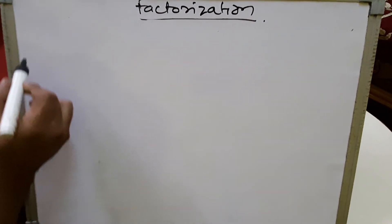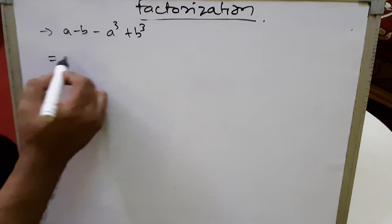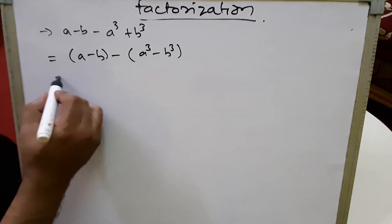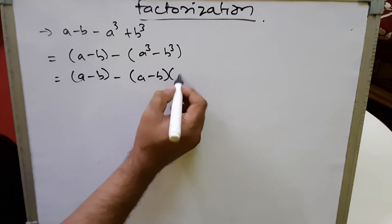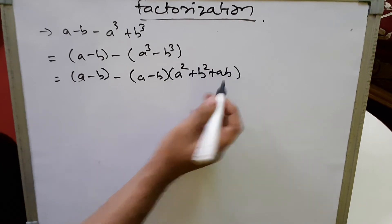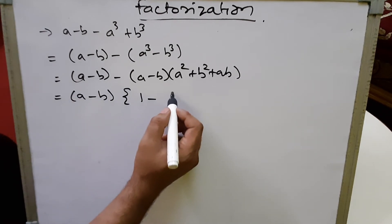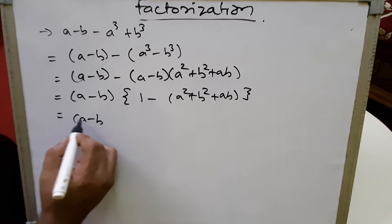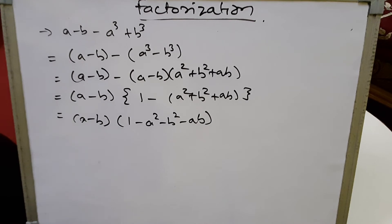Next sum: (a - b) - a³ + b³. Take (a - b) from the first term and take negative from the cube terms, giving (a-b) - (a³ - b³). Applying the difference of cubes formula: (a-b) - (a-b)(a² + b² + ab). Taking (a-b) common: (a-b)[1 - (a² + b² + ab)] = (a-b)(1 - a² - b² - ab).